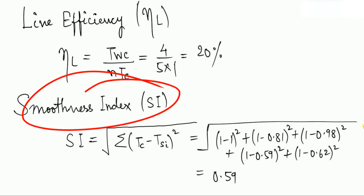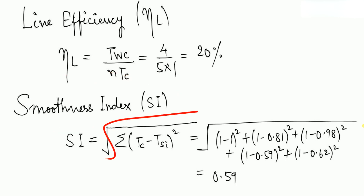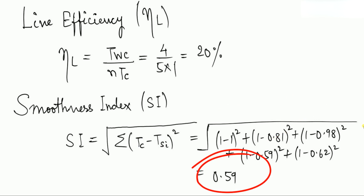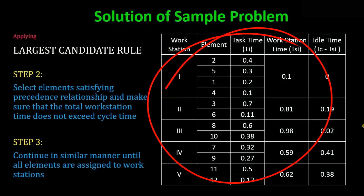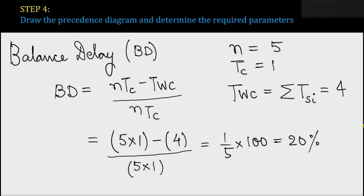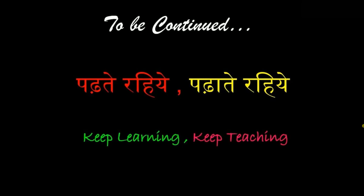The smoothness index equals the square root of the summation of (Tc − TSi) squared, where TSi is each workstation's time. Substituting the values gives the smoothness index result. These are the important calculations generally asked in exams, so watch this video as many times as needed. In the coming lectures we'll upload more practice problems. Keep learning, keep teaching — see you in the next video!